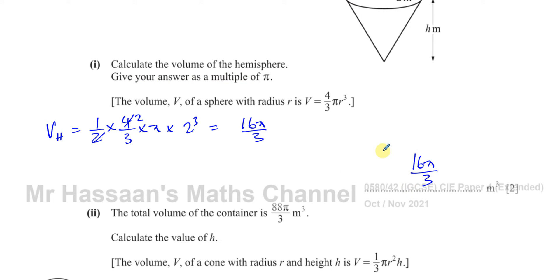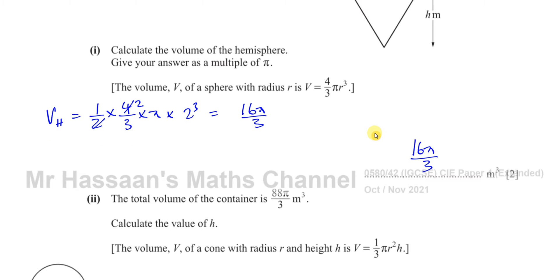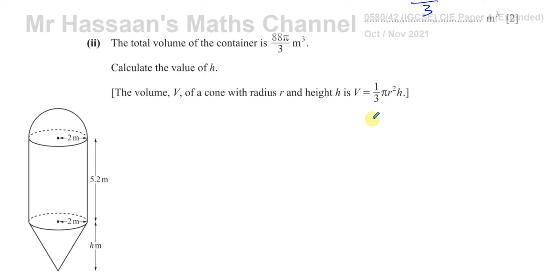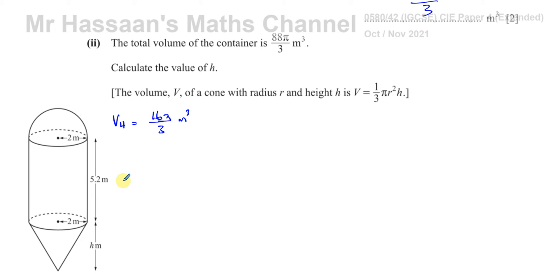Part two says the total volume of the whole container is 88π/3 meters cubed — calculate the value of h. So the volume of the whole thing is 88π/3, and we already found the volume of the hemisphere is 16π/3 meters cubed. We can also find the volume of the cylinder.